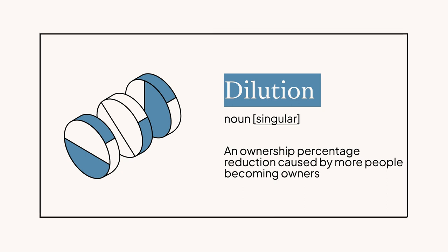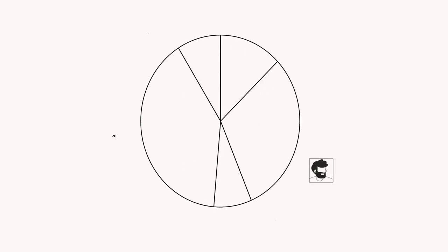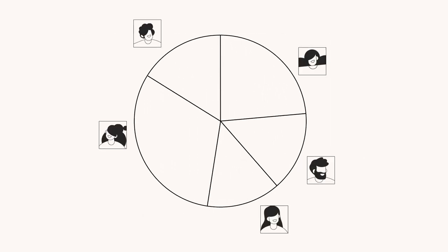Think of it kind of like this: your company is a pie. The more people taking pieces of the pie, the smaller everyone else's piece gets — dilution is the shrinking of those pieces. An important thing to remember is that dilution is present even when it comes to convertible equity, despite the fact that you haven't issued any actual shares to the investor. Think of it like someone calling dibs on that piece of pie — they just haven't taken it off the tray yet.